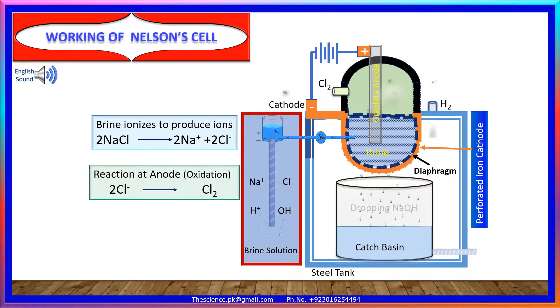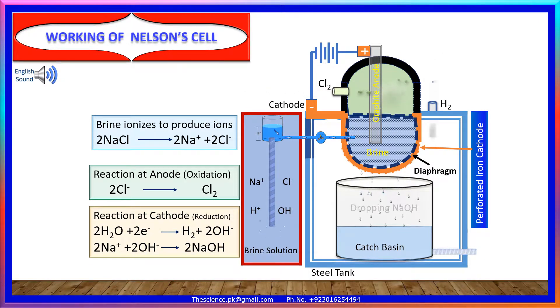Reaction at anode is oxidation: 2Cl- gives Cl2. Reaction at cathode is reduction.